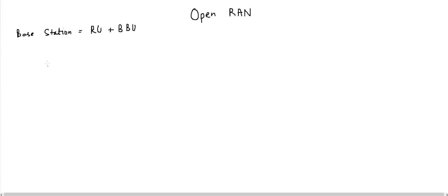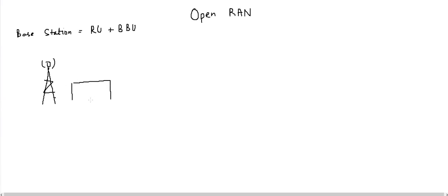If you go back to the past, the base station looks like this. A cabinet is located near your base station, and inside this cabinet the radio unit and BBU unit are located. Here is your antenna connected, and through this antenna this cabinet is connected. This is your traditional base station.